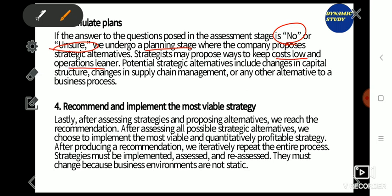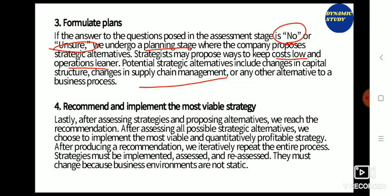Potential strategic alternatives include changes in capital structure, changes in supply chain management, or other alternative business processes. The key idea is that if answers to the planning questions are negative, the organization undergoes various planning stages to switch to an alternative strategy that will help it attain its goals.